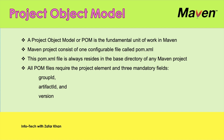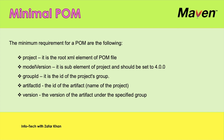POM is a fundamental unit of work in Maven. A Maven project consists of one configurable file called pom.xml. This pom.xml file always resides in the base directory of any Maven project. All POM files require the project element and three mandatory fields. These three mandatory fields are: group ID, artifact ID, and version. The minimal requirements for the POM are: project, model version, group ID, artifact ID, and version. Project is the root XML element of the POM file, and model version is a sub-element of project and should be set to 4.0.0.